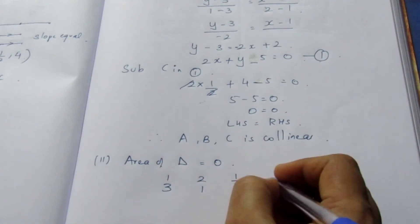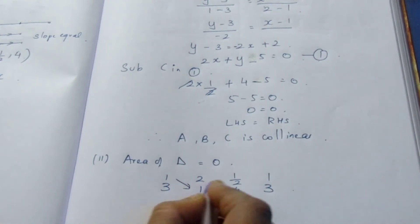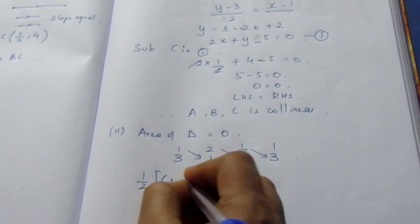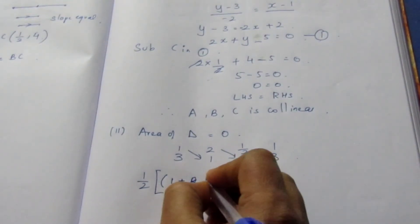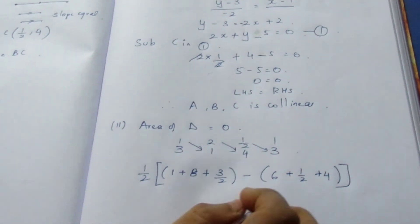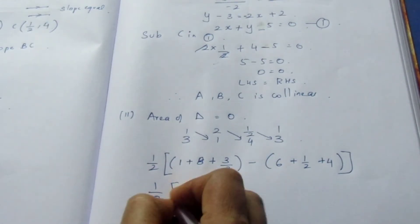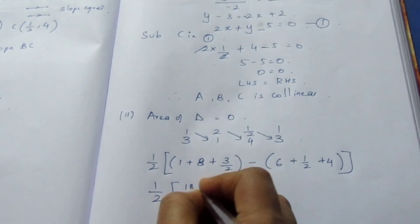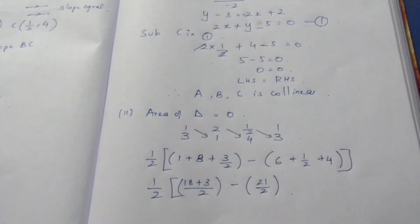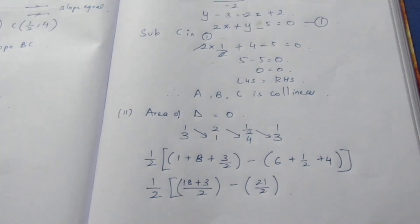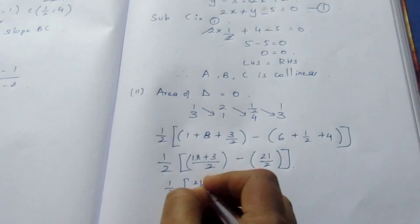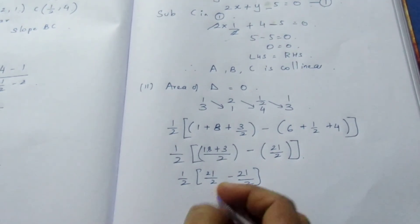Setting up the area formula with coordinates listed as x1=1, y1=3; x2=2, y2=1; x3=1/2, y3=4. Calculating: half times [(1·1 + 2·4 + (1/2)·3) − (3·2 + 1·(1/2) + 4·1)] = half times [(1 + 8 + 3/2) − (6 + 1/2 + 4)]. Using LCM, this simplifies to half × (21/2 − 21/2).